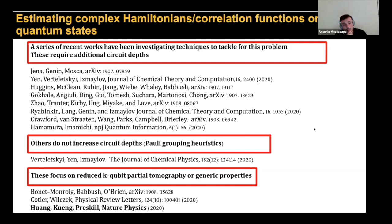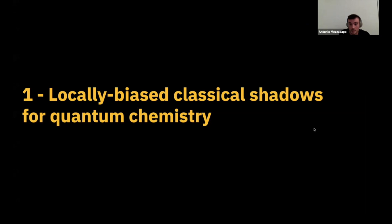There have been a couple of papers focused on retrieval of generic properties of any observable. The idea I'm going to present builds on top of one of these algorithms — specifically the idea of classical shadows, which I think was presented at this very same conference last week. We're going to show that a simple generalization of that idea can give very precise estimations for molecular energies without increasing circuit depth, which is a very important property for us.